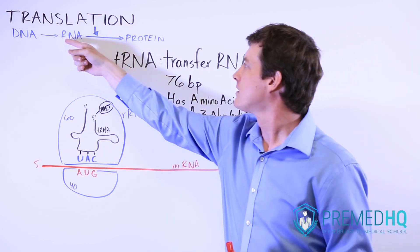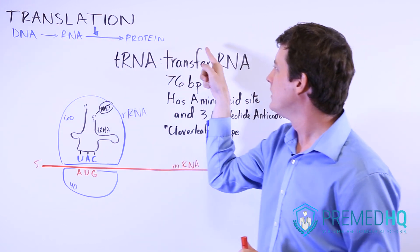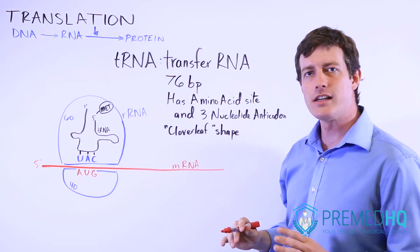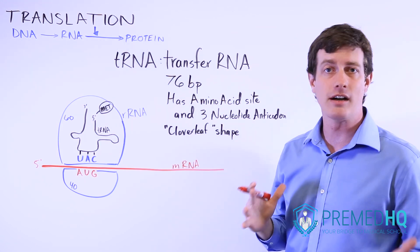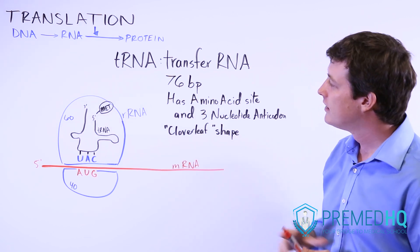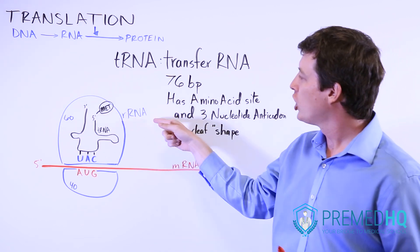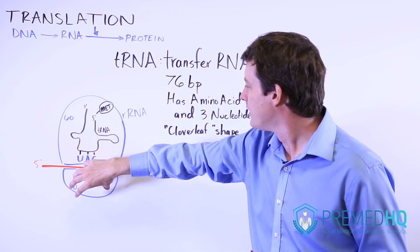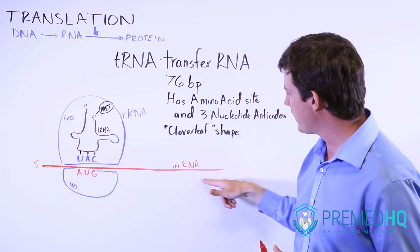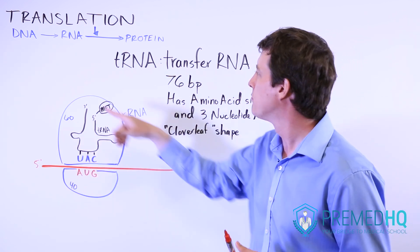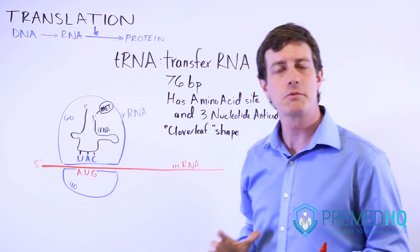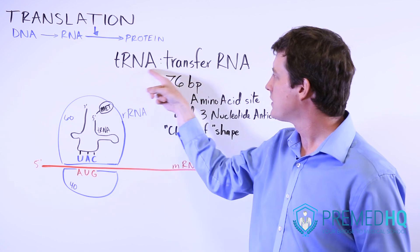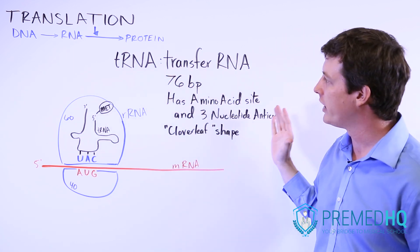Translation is the conversion of RNA into protein. It uses many different types of ribonucleic acids. We have rRNA, which is ribosomal, and that comprises the ribosomes. We use the mRNA transcript that we produced during the transcription process. And third, we use something known as tRNA, or transfer RNA.